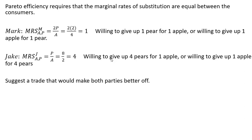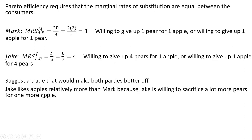Let's suggest a trade that makes both consumers better off. Jake likes apples relatively more than Mark, because Jake is willing to sacrifice a lot more pears for one more apple. Jake is willing to give up four pears for one more apple, while Mark is only willing to give up one pear for one more apple. So Jake likes apples relatively more than Mark.